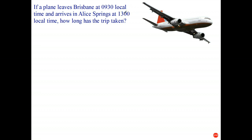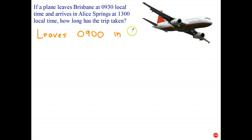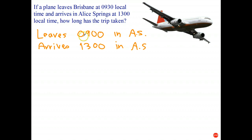Basically we've got the problem that these two times are in different time zones. The best way to do it is to only work on times in Brisbane or only work on times in Alice Springs. I'm going to work on Alice Springs time. The plane leaves — well, it's a half an hour earlier — so when it's 0930 hours in Brisbane it's 0900 hours in Alice Springs. So the secret is first convert them to the same time zone, and therefore it takes 4 hours since 9 plus 4 is 13.